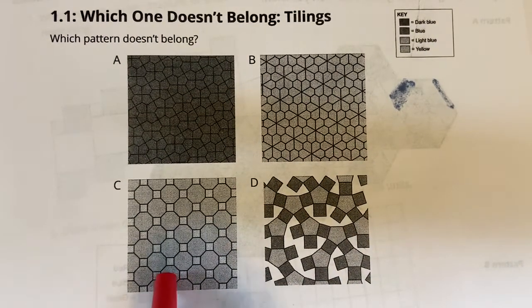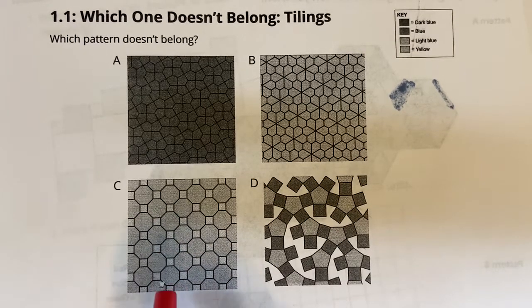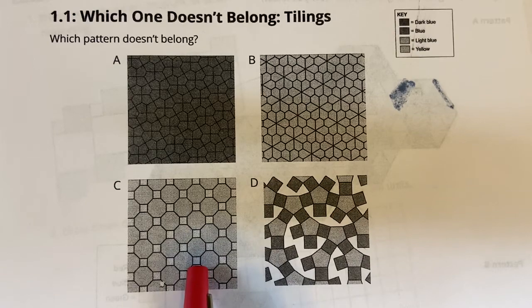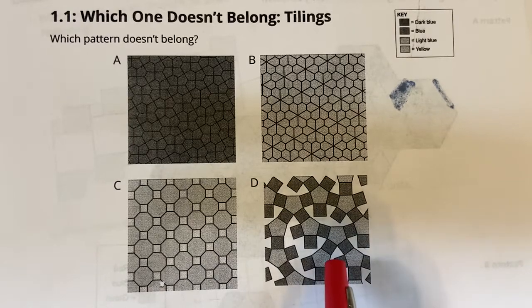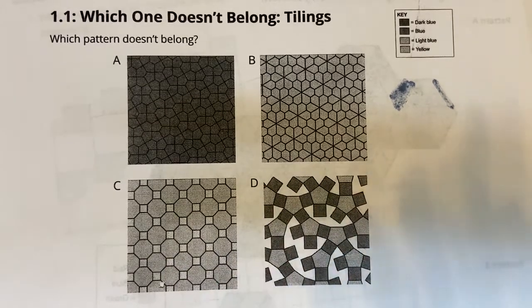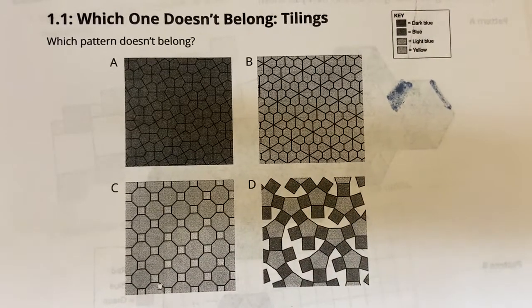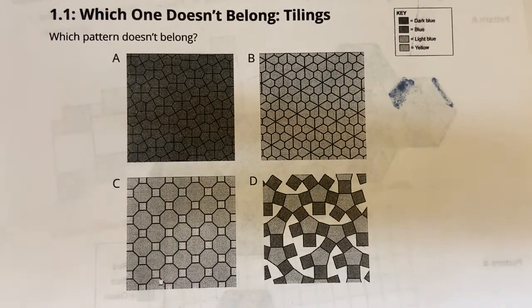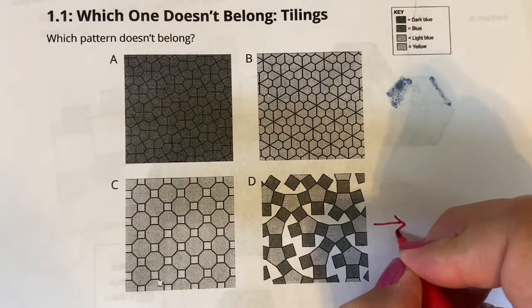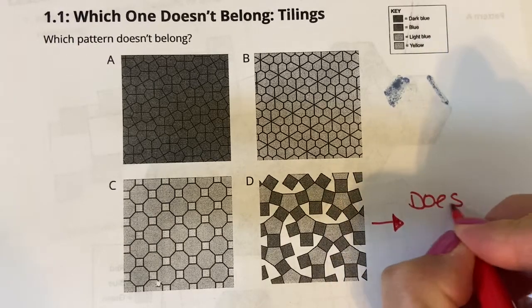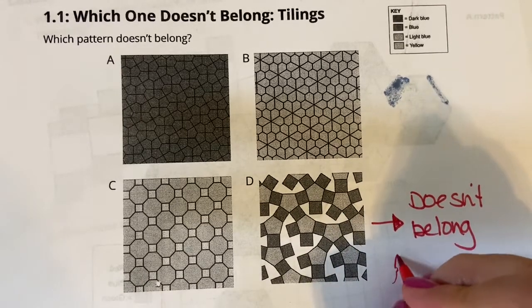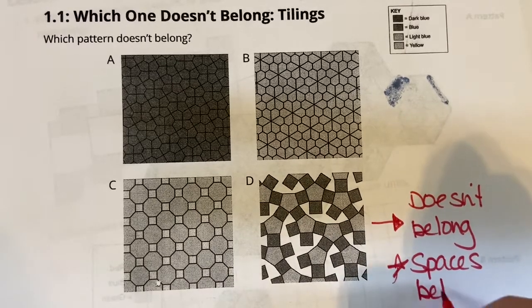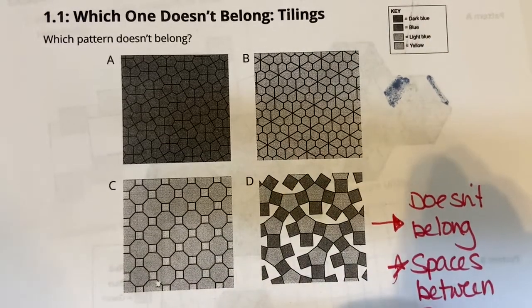Same with C — my squares take up the spaces. If I look at the eight-sided figure, my spaces are actually a shape. I have an octagon, which is an eight-sided shape, and then a square, which is a four-sided shape — so that has no spaces. This one has the pentagon and the square, but there's no way to make those gap areas into shapes. So I would say D would be the one that doesn't belong because it has spaces between the shapes — there's no considerable figure in there.